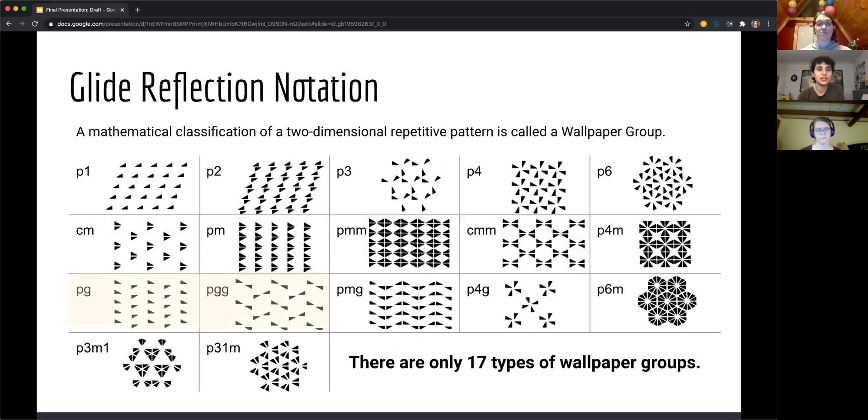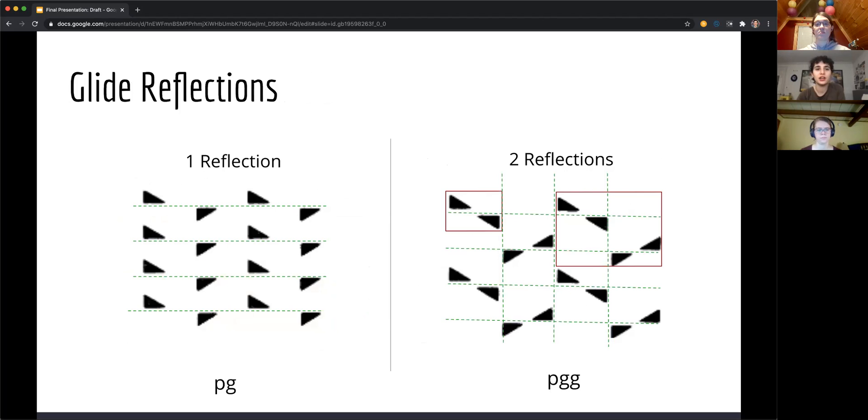For glide reflection notation, this occurs when there is a G in the notation. As you can see here, if there is one reflection, the triangle reflects over this dashed green line. And if there are two reflections, the first reflection is over the horizontal dashed green line. And the second reflection you can see in this larger red box reflects that first reflection over a vertical glide reflection line.